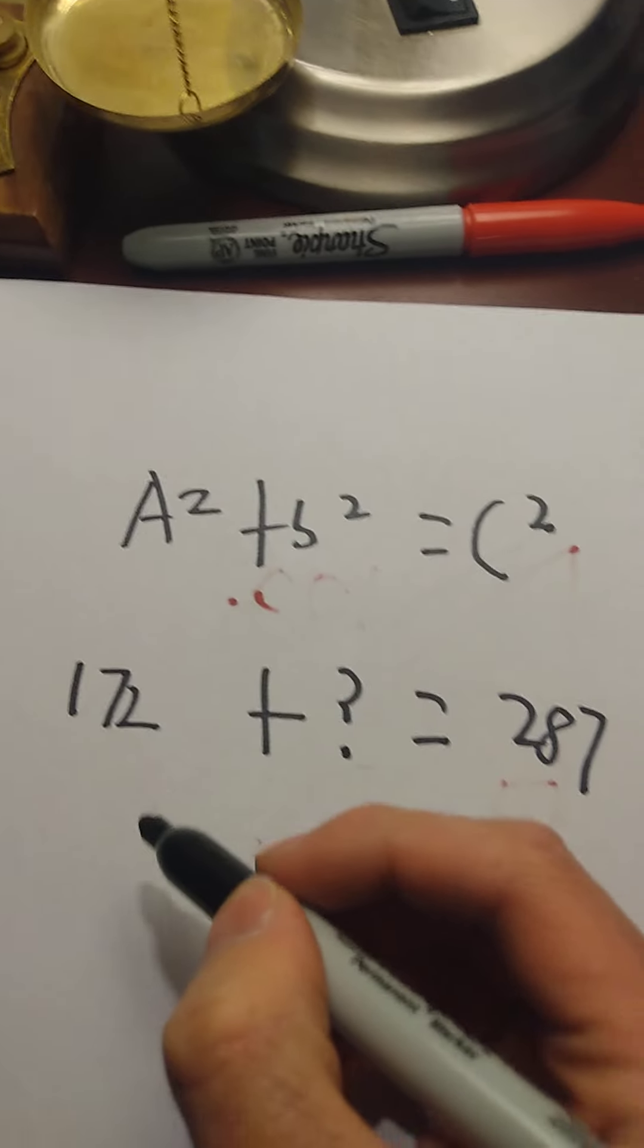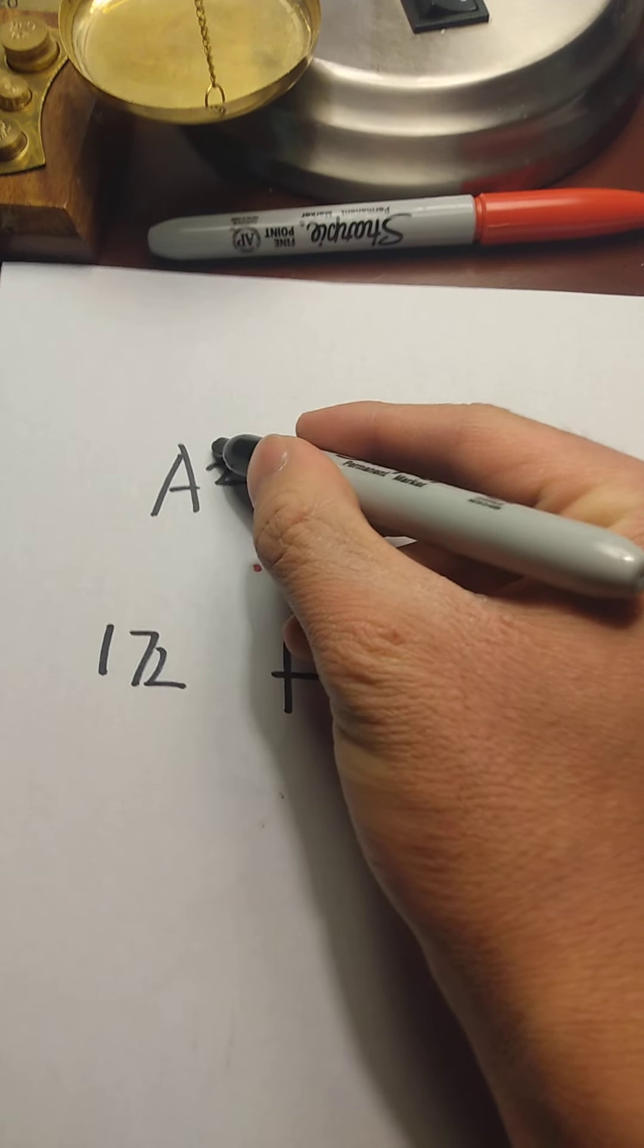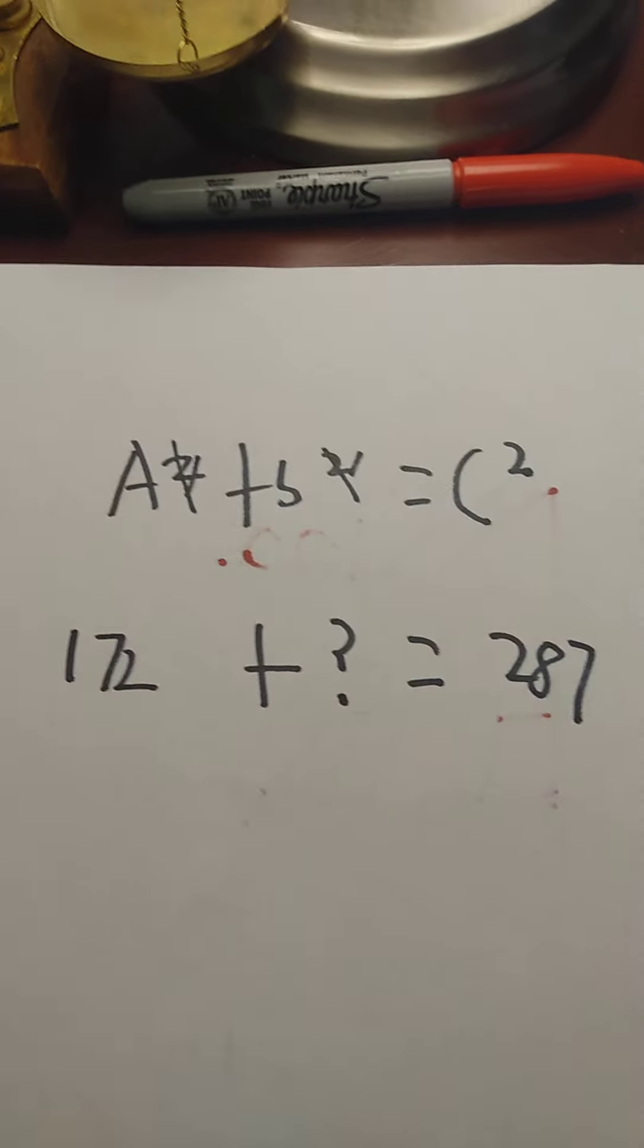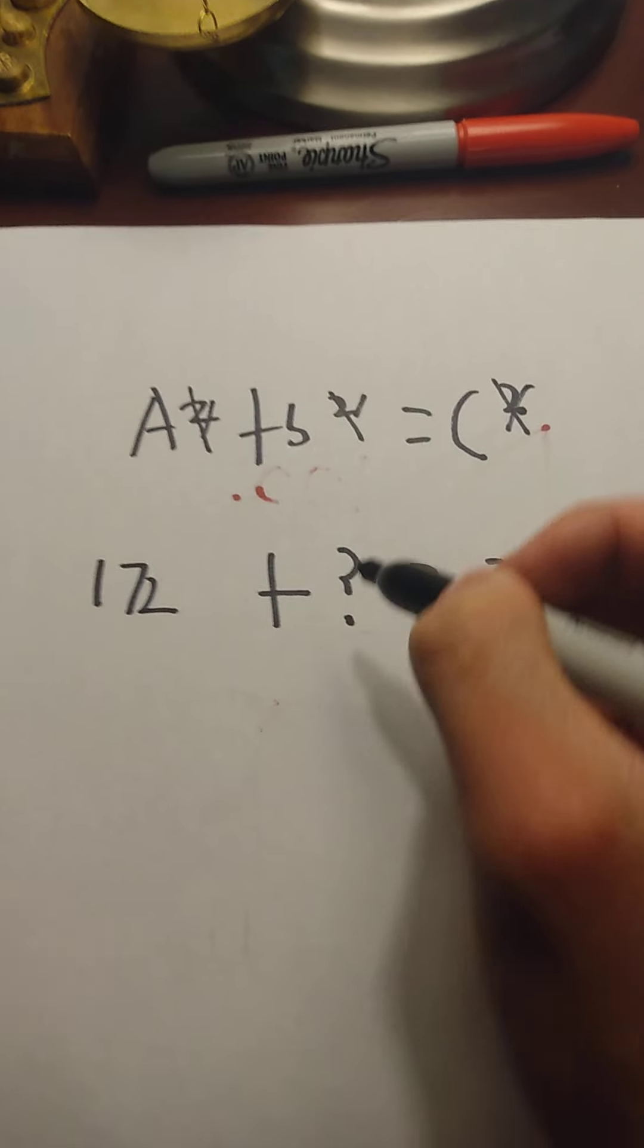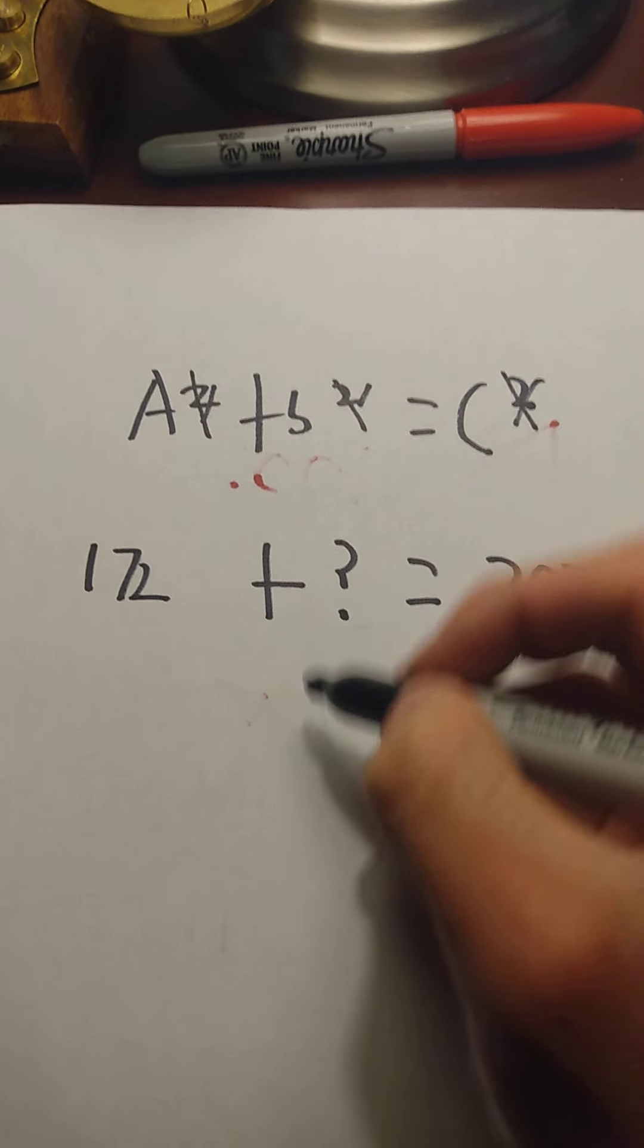And since there are no numbers that have a square in them, we don't even do the squares, because we ignore them, because they're not in the square root forms.